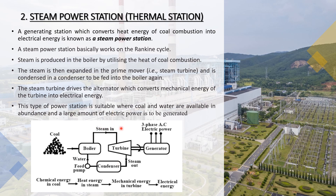Steam is produced in the boiler by utilizing the heat of coal combustion. The steam is then expanded in the prime mover — that is, the steam turbine — and then passes through the condenser to be fed into the boiler again. The cycle goes: condenser, feed pump, boiler, and back to water.